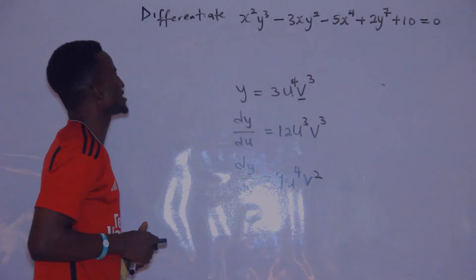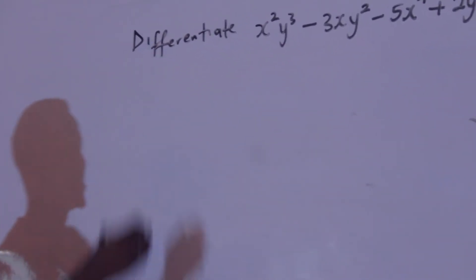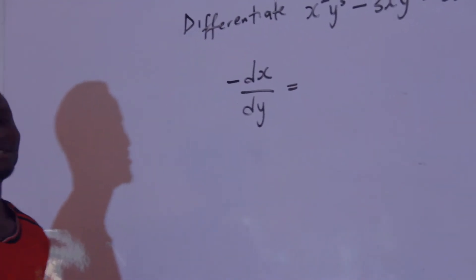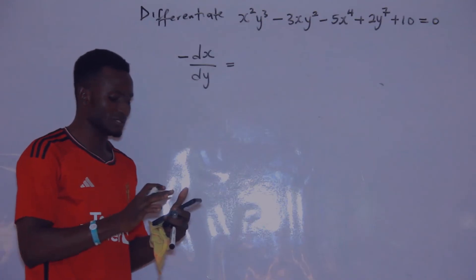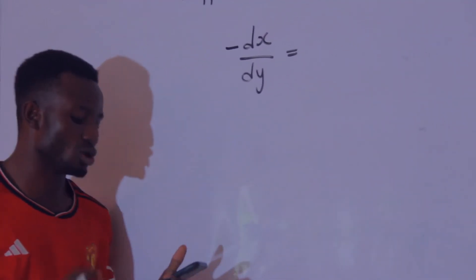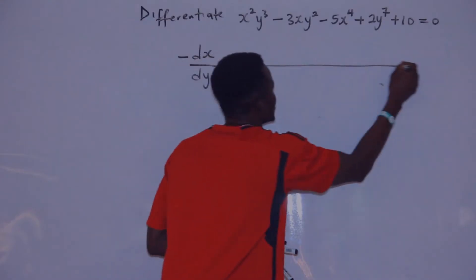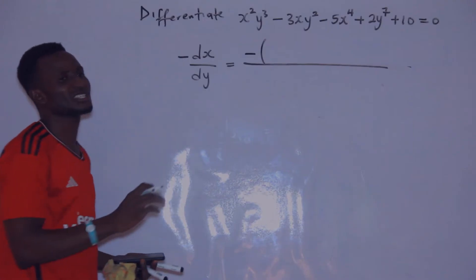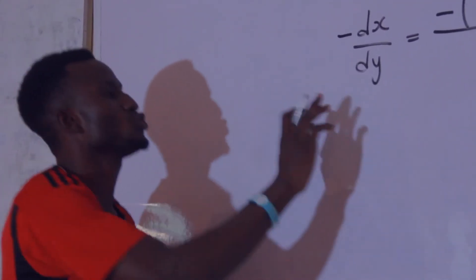Having known this, we now go straight to the shortcut for implicit differentiation. The shortcut says: dy/dx equals minus the partial derivative with respect to x over the partial derivative with respect to y. So at the numerator you differentiate with respect to x only, and at the denominator you differentiate with respect to y only.